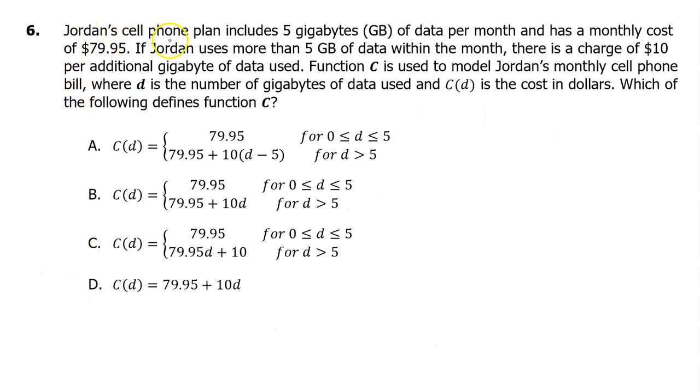Number 6. Jordan's cell phone plan includes 5 gigabytes of data per month and has a monthly cost of $79.95. If Jordan uses more than 5 gigabytes of data within the month, there is a charge of $10 per additional gigabyte of data used. Function C is used to model Jordan's monthly cell phone bill, where D is the number of gigabytes of data used, and C at D is the cost in dollars. Which of the following defines function C? We are being asked to model Jordan's monthly cell phone bill. However, Jordan's bill will be calculated differently depending on how many gigabytes of data he uses. There are two main scenarios.